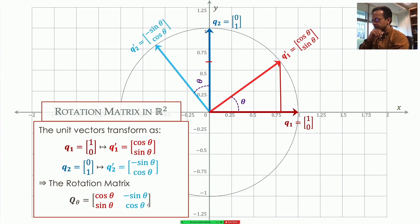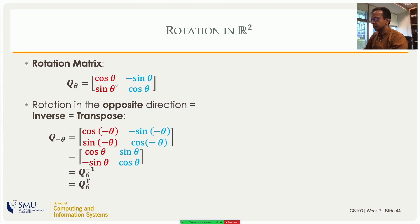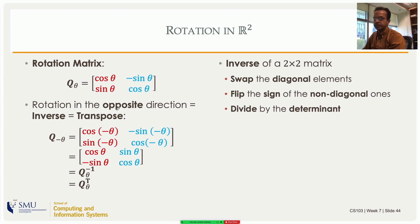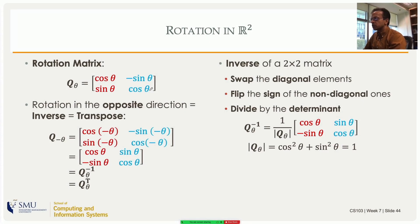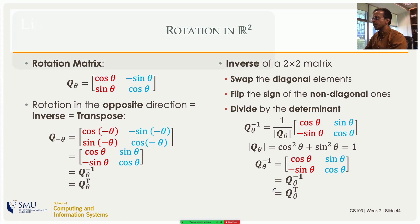Whatever the rotation matrix does to the two unit vectors it does to all other vectors, so the rotation matrix has q1-prime and q2-prime side by side: [[cos θ, -sin θ], [sin θ, cos θ]]. Rotating in the opposite direction replaces theta with minus theta, giving [[cos θ, sin θ], [-sin θ, cos θ]], which is by definition the inverse. And if you look at it, it's actually the transpose. To verify: swap the diagonal elements, flip the signs of the off-diagonal, divide by the determinant. The determinant is cos²θ + sin²θ = 1, confirming the inverse equals the transpose.